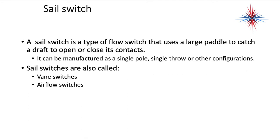A sail switch is a type of flow switch that uses a large paddle to catch a draft to open or close its contact. It looks just like a sail — it's aptly named. It can be manufactured as a single pole, single throw, or any other configuration. Sail switches are also called vane switches or airflow switches.